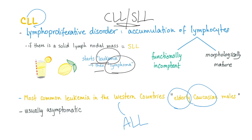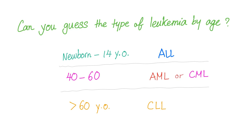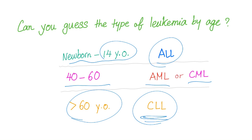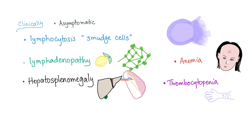For CLL, the patient will typically be elderly, usually Caucasian, and probably male. CLL is usually asymptomatic. You can guess the type of leukemia by age: newborn to 14 years old is ALL; around 60, AML or CML; more than 60, CLL. So CLL presents in the oldest patients. ALL can have a bimodal distribution so the elderly can get ALL as well, but generally CLL is asymptomatic most of the time.